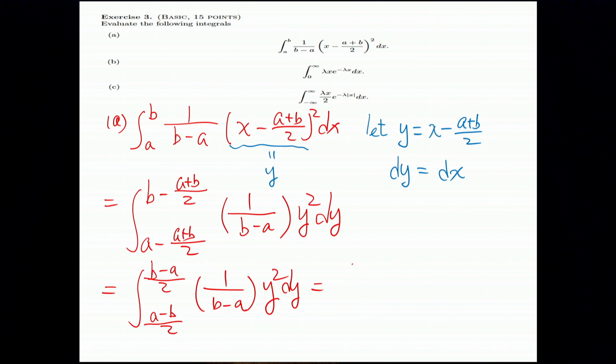So, 1 divided by B minus A, we put this in the front. And this is 1 third Y cubed. And that's from A minus B divided by 2 to B minus A divided by 2. That's the calculation. Finally, this is B minus A squared divided by 12. That is part A.